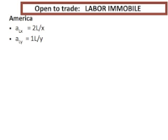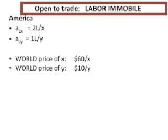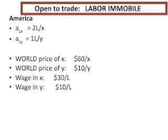As before, we'll hold labor immobile between sectors when they open up to trade. We'll pick a world price of X of $60 per X and a world price of Y of $10 per Y. This will induce exports of X and imports of Y. Using the formula for the wage — price times marginal productivity of labor — we get $30 per worker in X and $10 per worker in Y. So we see an increase in the wage in the export sector and a decrease in the wage in the Y sector.